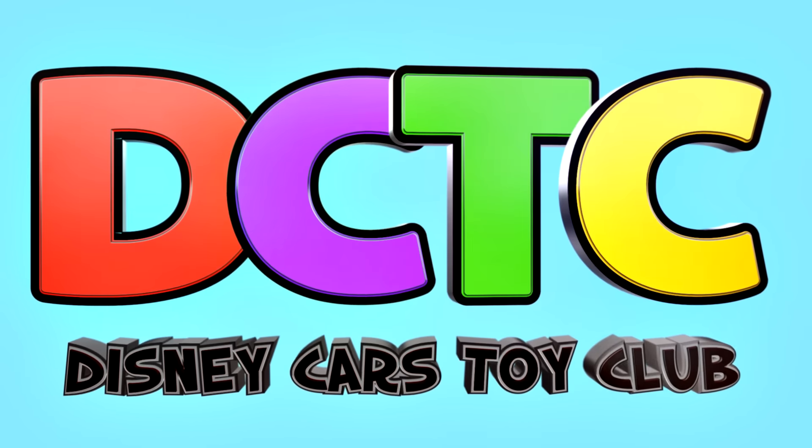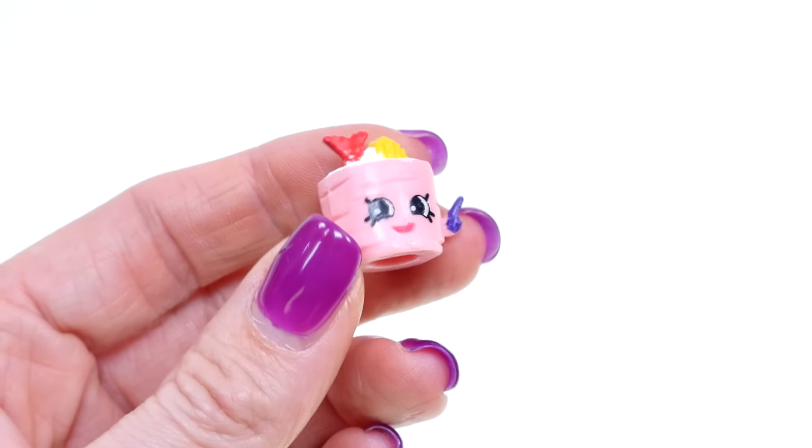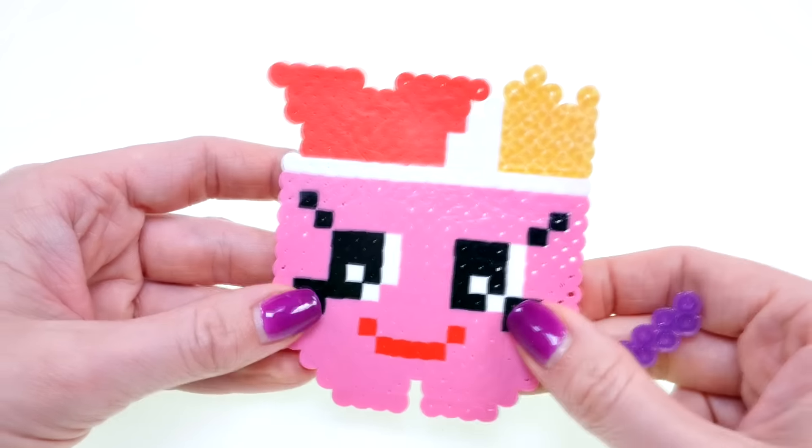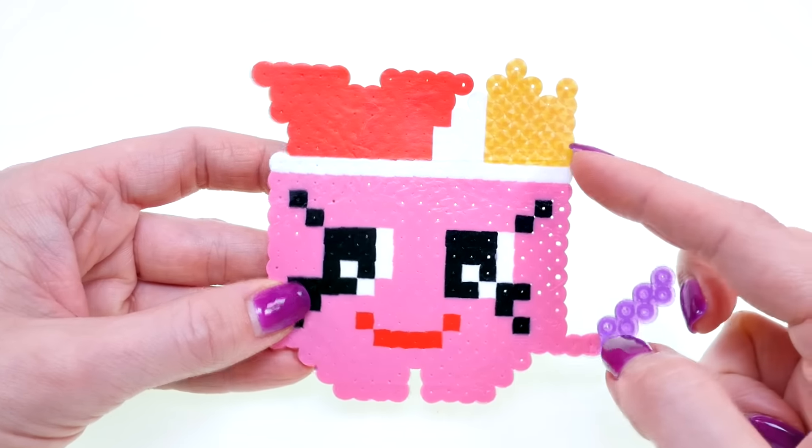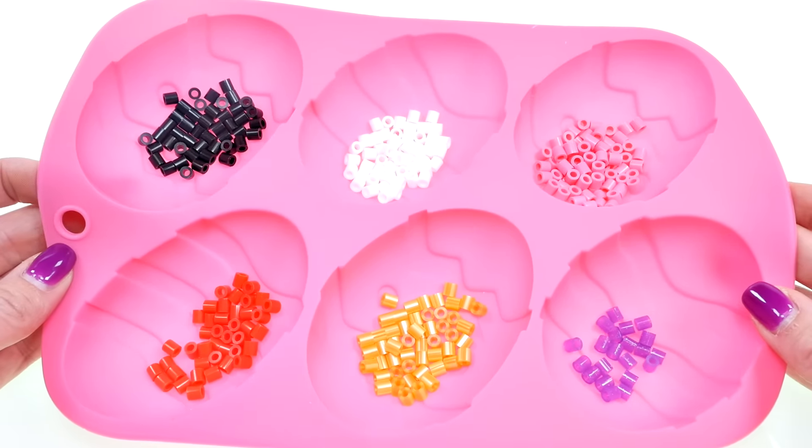Hey guys, welcome back to the channel. It's Kaylee and today I am making a Suzy sushi perler bead pattern. Here are the colors that I'm going to use: black, white, pink, red, yellow, and purple.